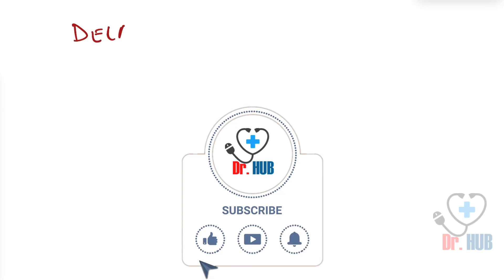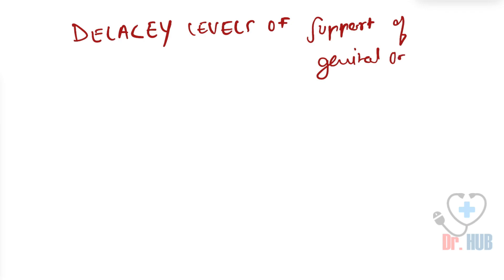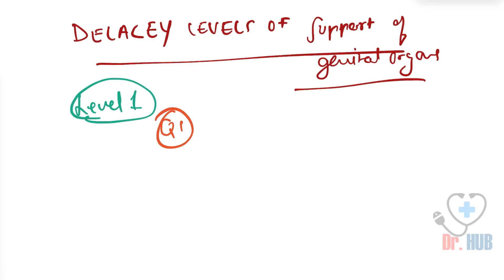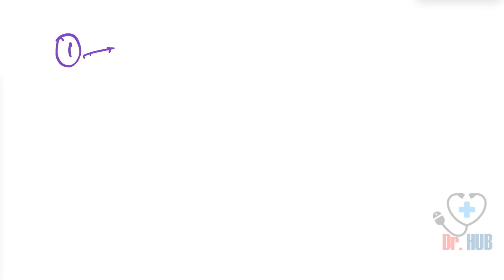Today we are going to look at the DeLancey levels of support of the genital organs. To begin with, we look at Level 1. Before we continue, we have some questions: the first is what is Level 1 of the DeLancey level of support of genital organs, and the second question is what is Level 3 about. So we look at answering all these questions and learn a lot more.